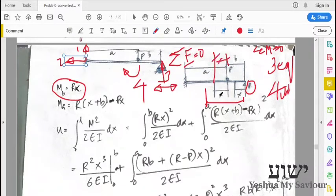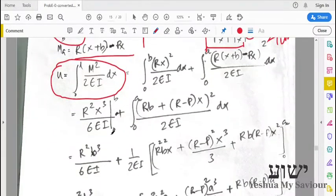To find the moment at this point, we will have R into b plus x minus P into x. This is the equation for strain energy. Substitute in terms of A, I divide the limits 0 to b and 0 to a. In this region I apply the limits and integrate. I have grouped the x terms: R minus P into x and R into b.